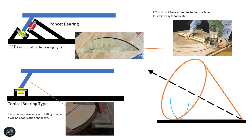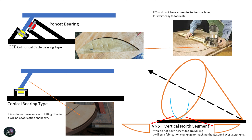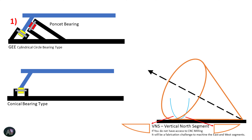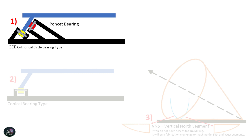Another type which is very popular is called VNS — Vertical North Segment. It is very popular because of its compact size and its ability to have horizontal bearings and a drive mechanism. The flat base type can also have a horizontal drive mechanism, but the flat base type usually has a very complex drive mechanism. However, if you do not have access to a CNC milling machine, making VNS segments can be challenging. So let's focus on type one.